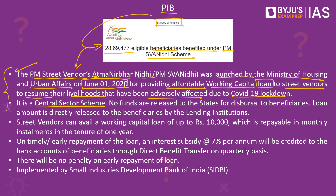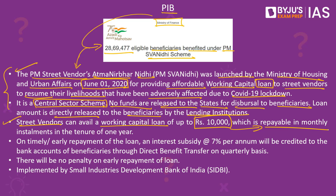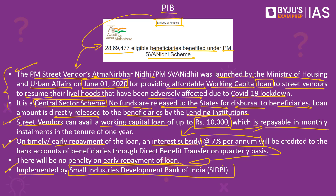This scheme is a central sector scheme, which is entirely funded and implemented by the centre, and the funds are not released to states for dispersal to beneficiaries. Instead, the loan amount is directly released to the beneficiaries by the central lending institutions. Under the scheme, street vendors can avail a working capital loan of up to 10,000 rupees, which they can repay in monthly instalments. If they make repayment on time or provide for early repayment, they are also eligible for an interest subsidy at the rate of 7% per annum, with no penalties for early repayment. The entire scheme is being implemented by SIDBI, the Small Industries Development Bank of India, to primarily promote the livelihood of street vendors disrupted by the pandemic.